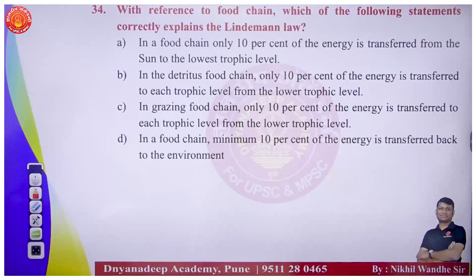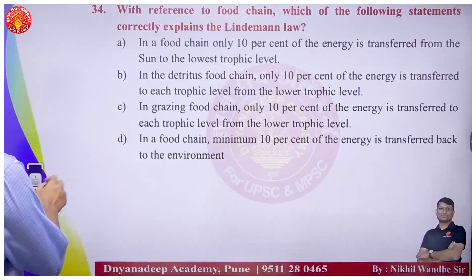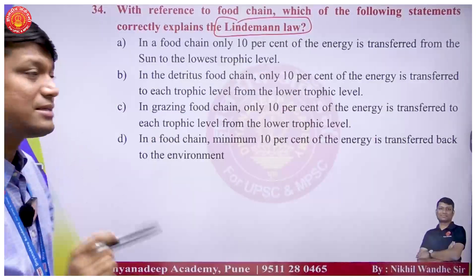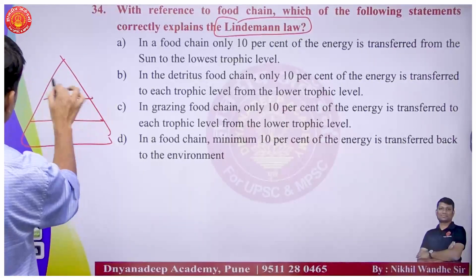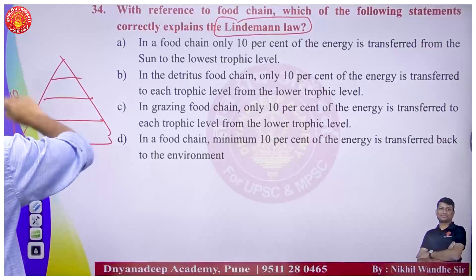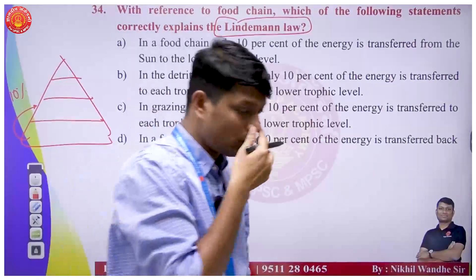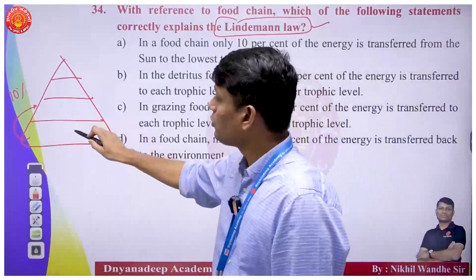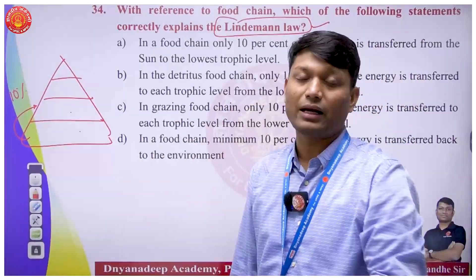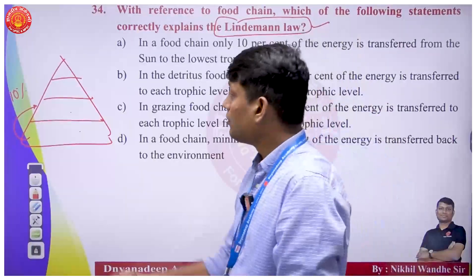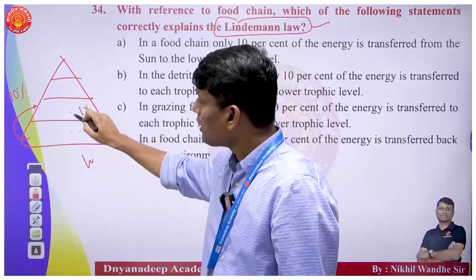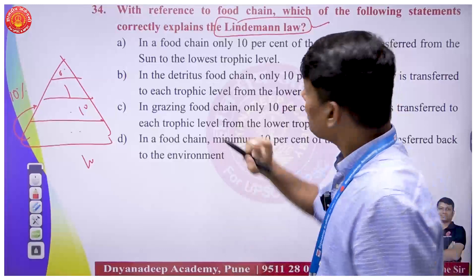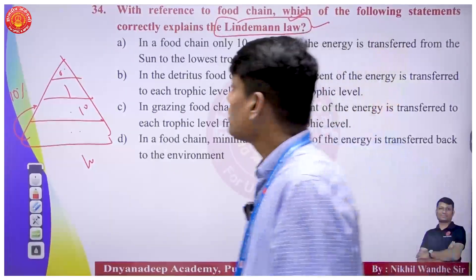Question 34 on Lindeman's Law: moving from one trophic level to another, the energy transfer is only 10%. If there is 100 units of energy at one trophic level, only 10 units are transferred to the next, then 1 unit, then 0.1 unit, and so on. This is Lindeman's Law and is most applicable to the grazing food chain.